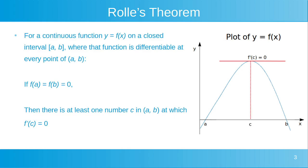For those conditions, if f of a equals f of b equals 0, then there is at least one number x equals c in the open interval a to b — so between a and b — at which f prime of c is equal to 0. f prime of c is the derivative of f, which we can write as f prime of x, specifically where x equals c. So the derivative of our function, where x equals c, is equal to 0 for at least one number c between a and b. That's what Rolle's Theorem is stating.